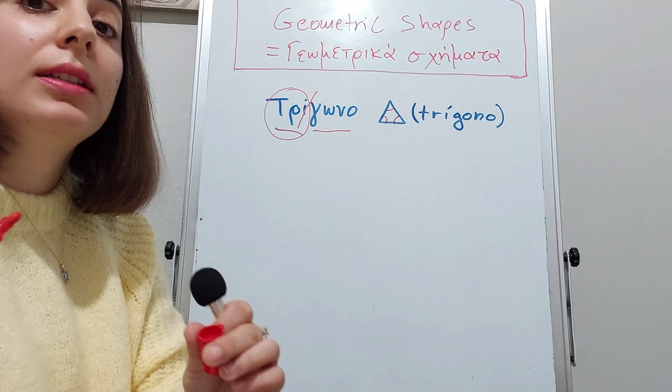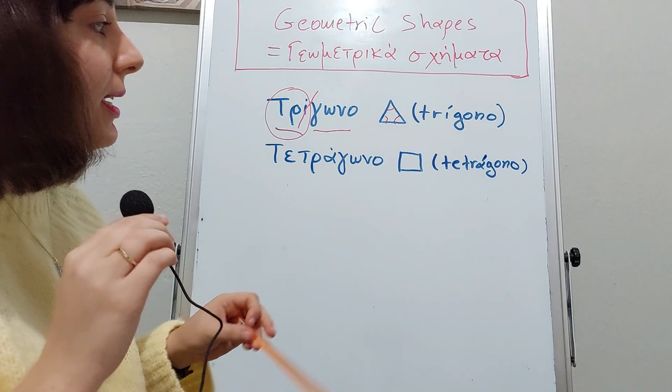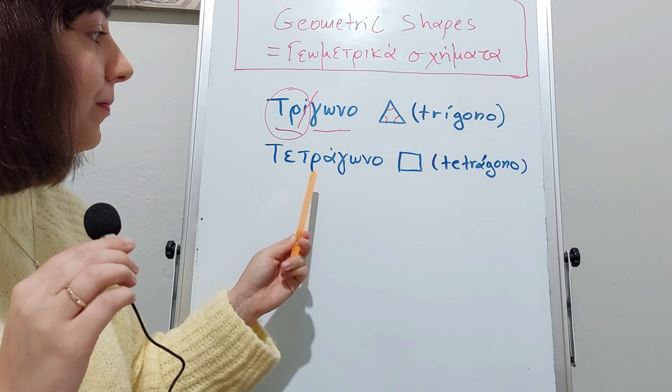Τρίγωνο. The next shape is τετράγωνο. Again, this is a compound word.